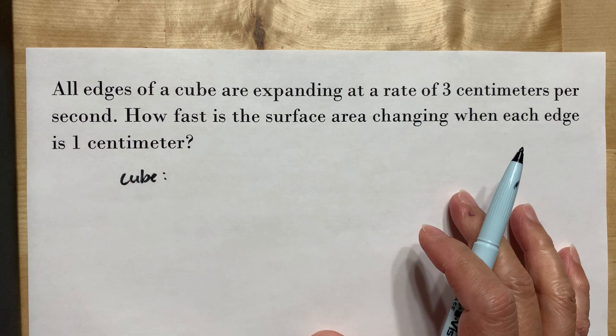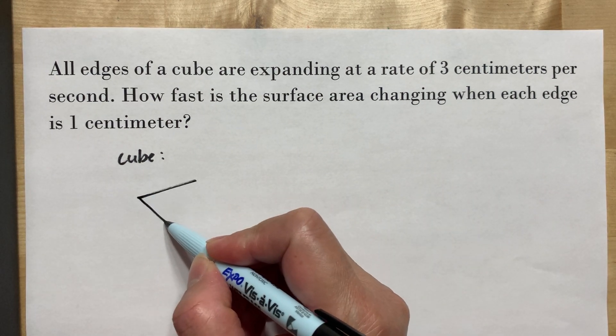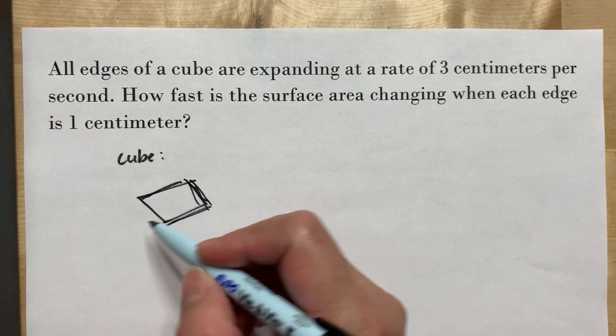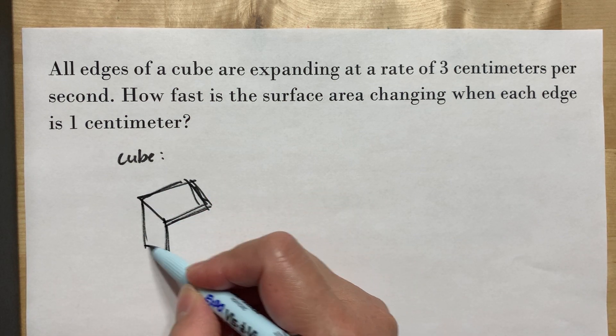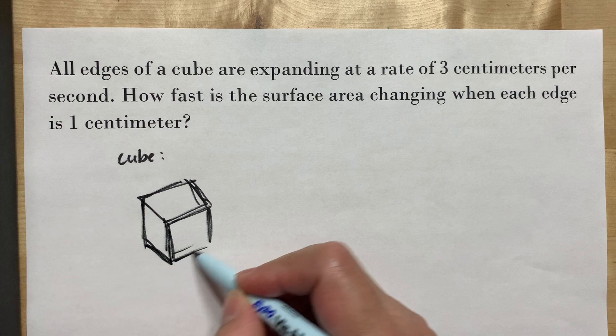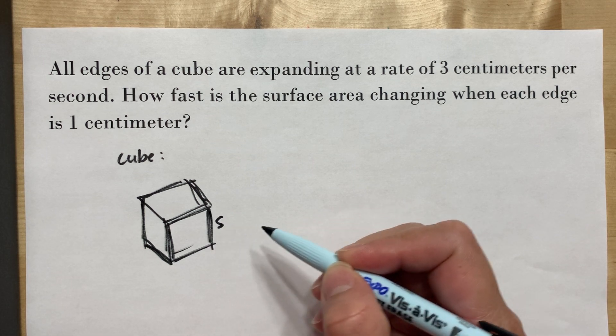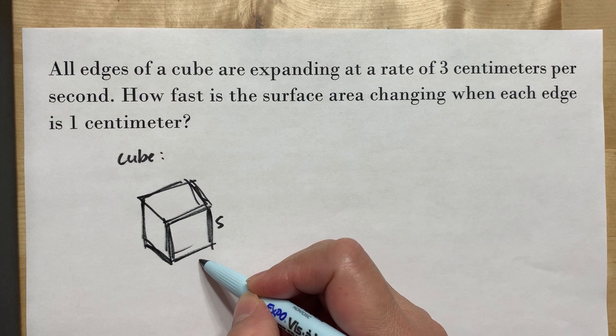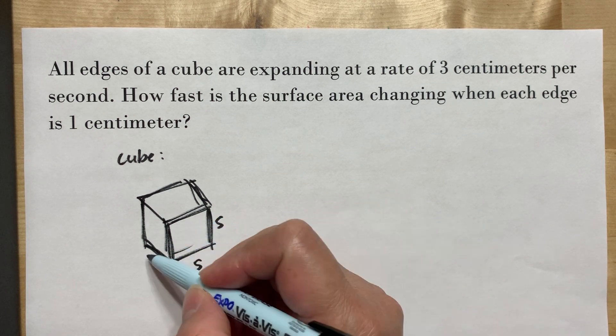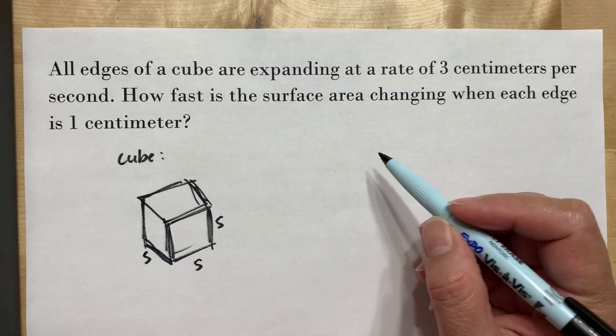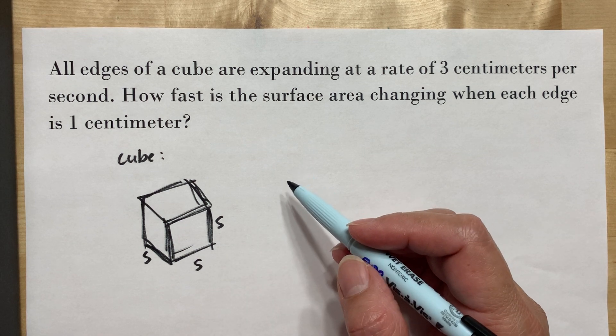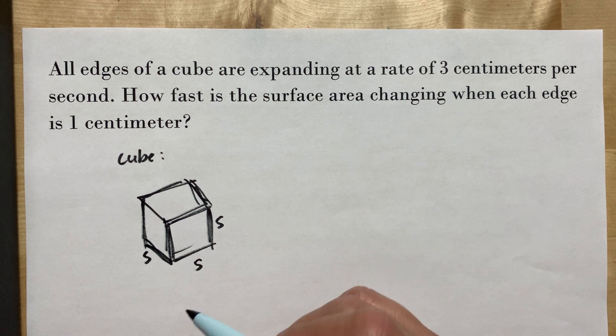What do we know about the cube? The cube has all sides the same. If this is the side or the height of the cube, it's the same thing with the width of the cube and the thickness of the cube. The cube has all the same sides. The thickness, the height, and the width are the same.